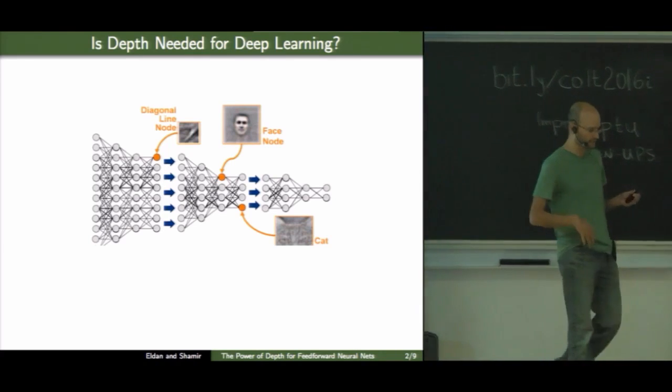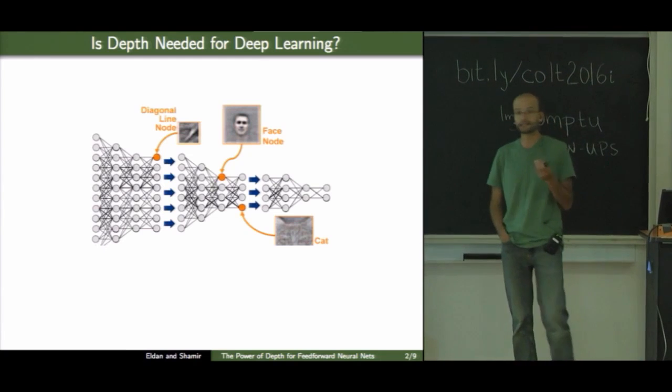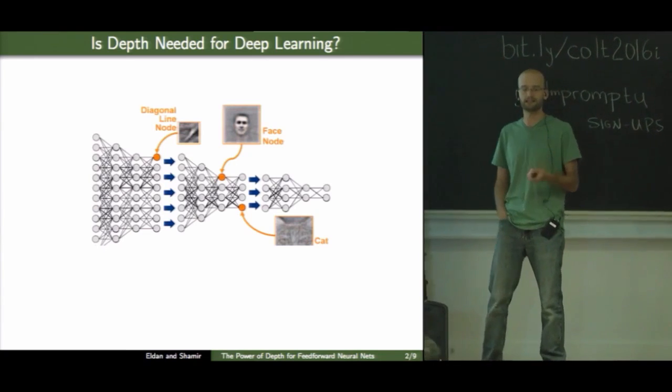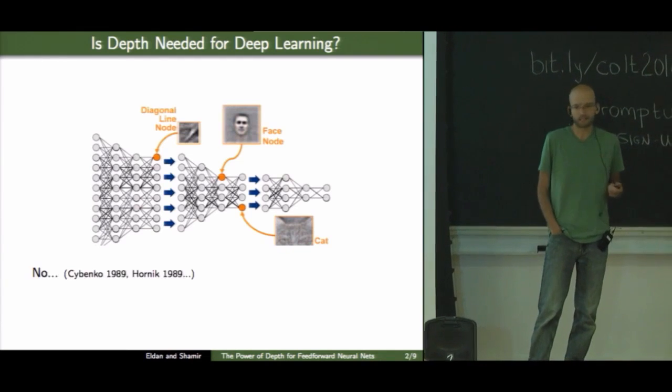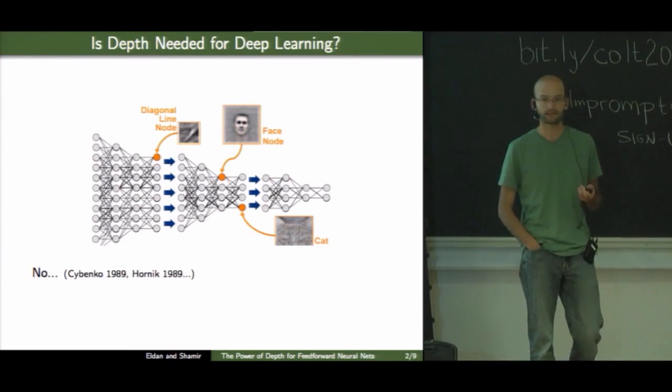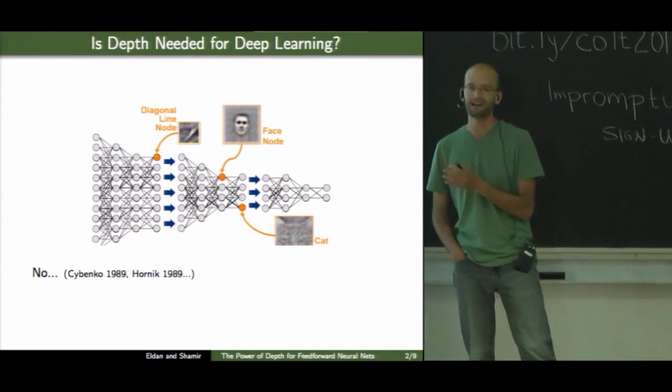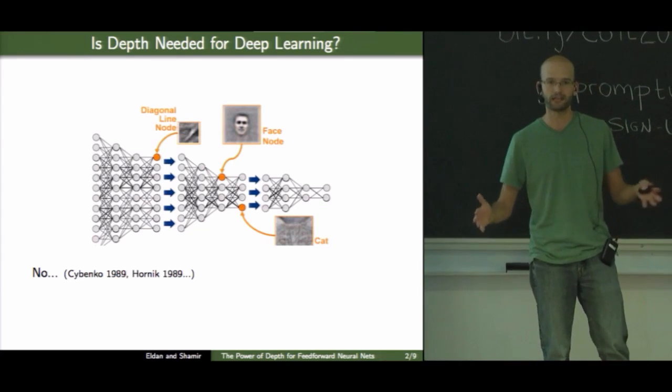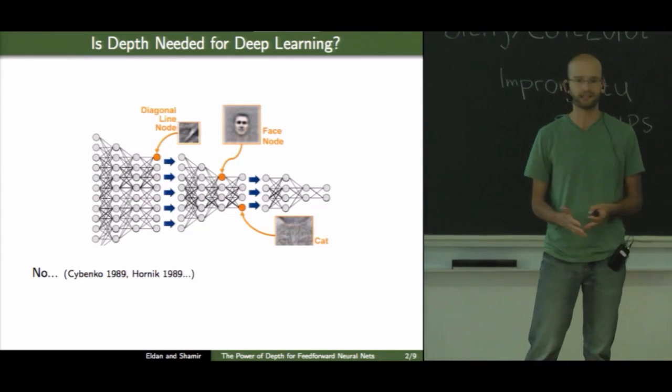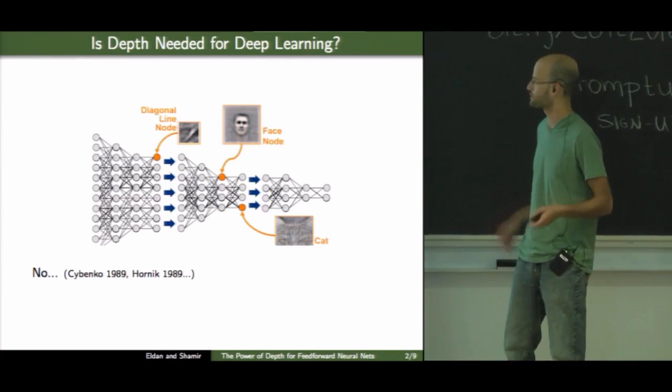But this is just a hand-waving argument. Can we actually formalize it? Is it actually true that depth is needed for deep learning? And in some sense, we already know the answer, and the answer is no. For about 30 years now, we know that basically any continuous function on a bounded domain in R^d can be approximated with just a two-layer network which is sufficiently large.